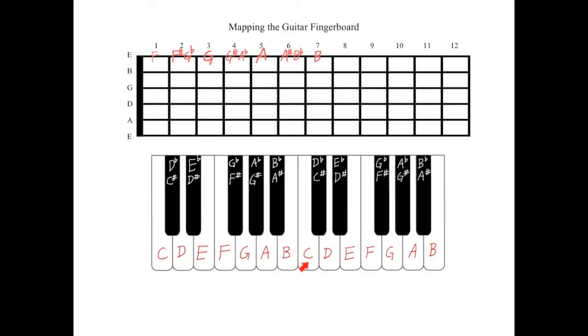Then C, then C sharp or D flat, then D, then D sharp or E flat, followed by E. Since most guitars have more than 12 frets, you can find additional notes by starting again on E.